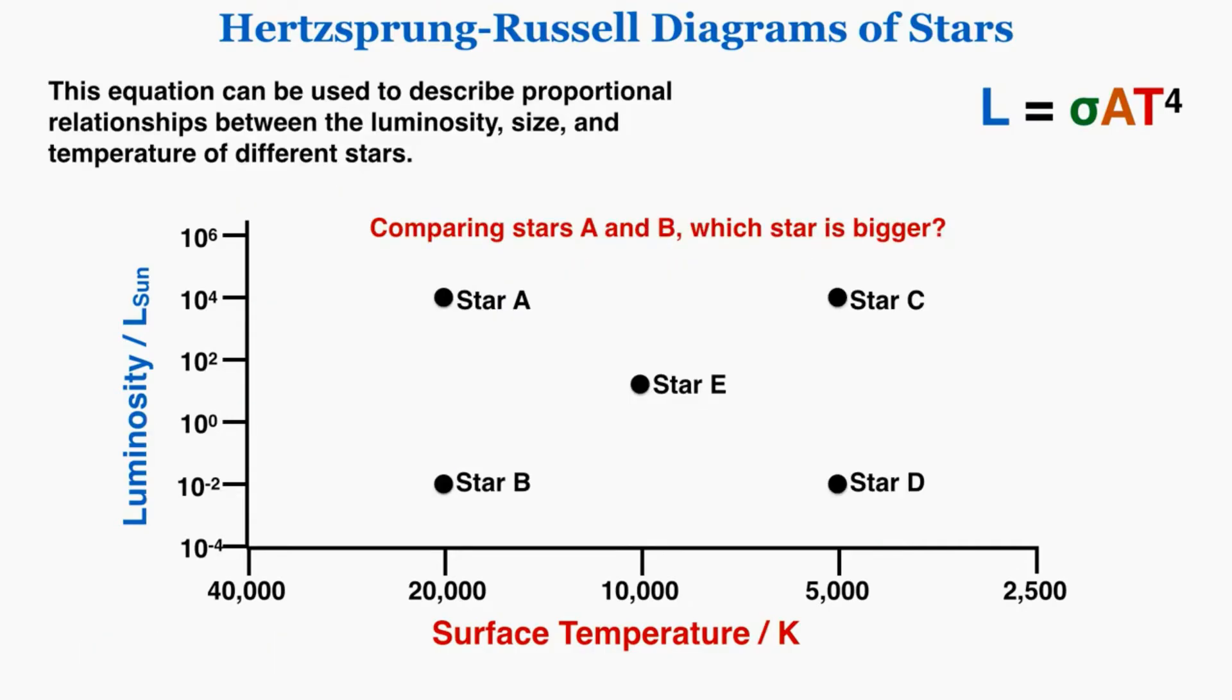We can now try comparing stars A and B and see which star is bigger here. Star A has the greater luminosity and both stars have the same surface temperature. Plugging that into the equation for area, if the denominators are the same but the numerator of A is bigger than the numerator of B, that means that the surface area of A will be bigger than the surface area of B. So star A is the bigger star.